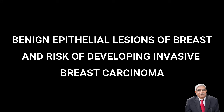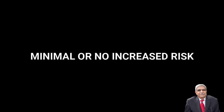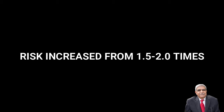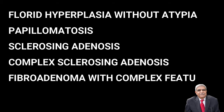There is a definite relation between benign epithelial lesions of the breast and risk of developing invasive carcinoma. Lesions with minimal or no increased risk include fibrosis, cystic change, apocrine metaplasia, duct ectasia, adenosis, and fibroadenoma. Lesions with 1.5 to 2 times increased risk include florid hyperplasia without atypia, papillomatosis, sclerosing adenosis, complex sclerosing adenosis, and fibroadenoma with complex features. Lesions with 4 to 5 times increased risk include atypical lobular hyperplasia and atypical ductal hyperplasia.